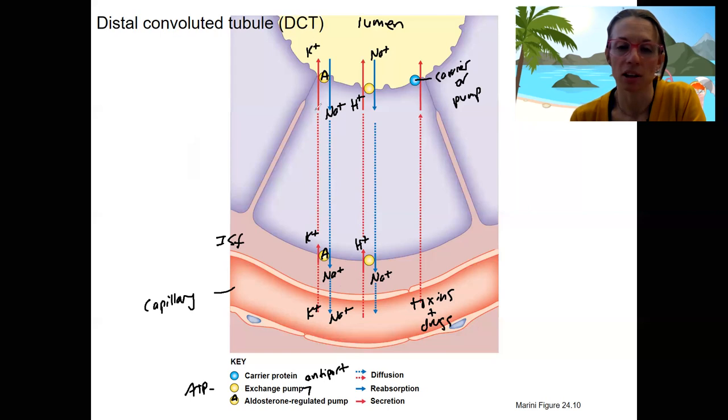So potassium is going out, secreted. Sodium is being reabsorbed. These pumps are put into the membrane via stimulation by aldosterone, a steroid hormone produced in the adrenal gland.